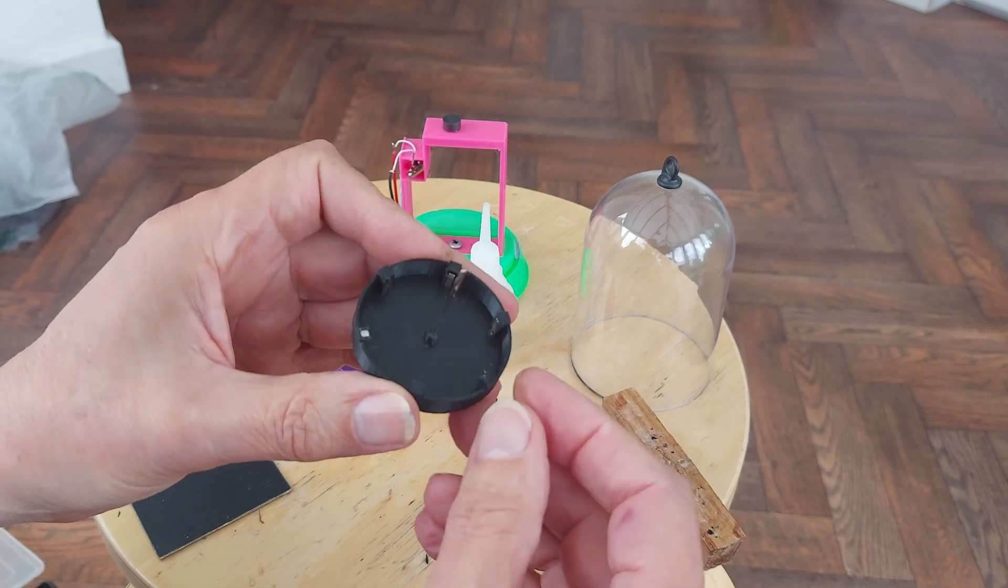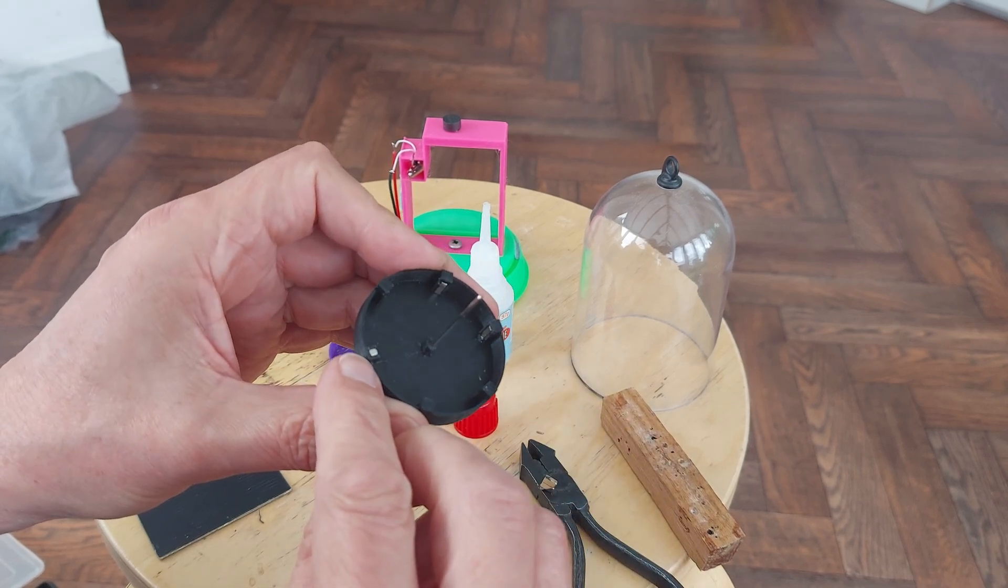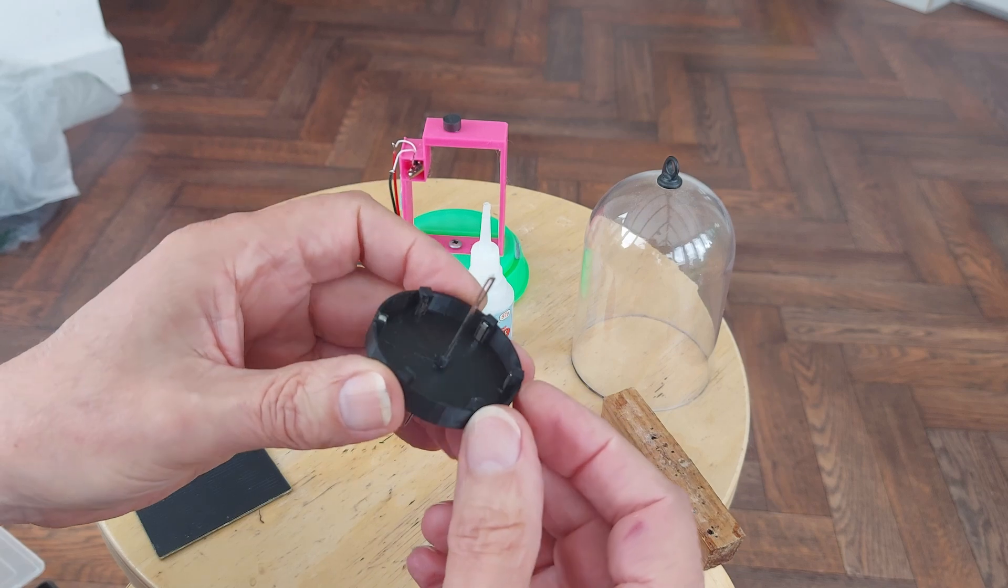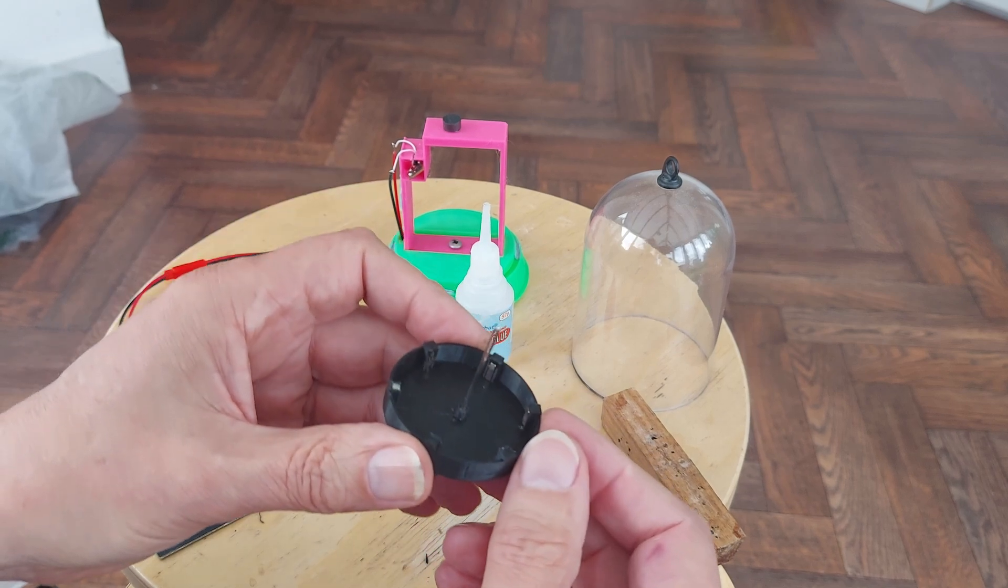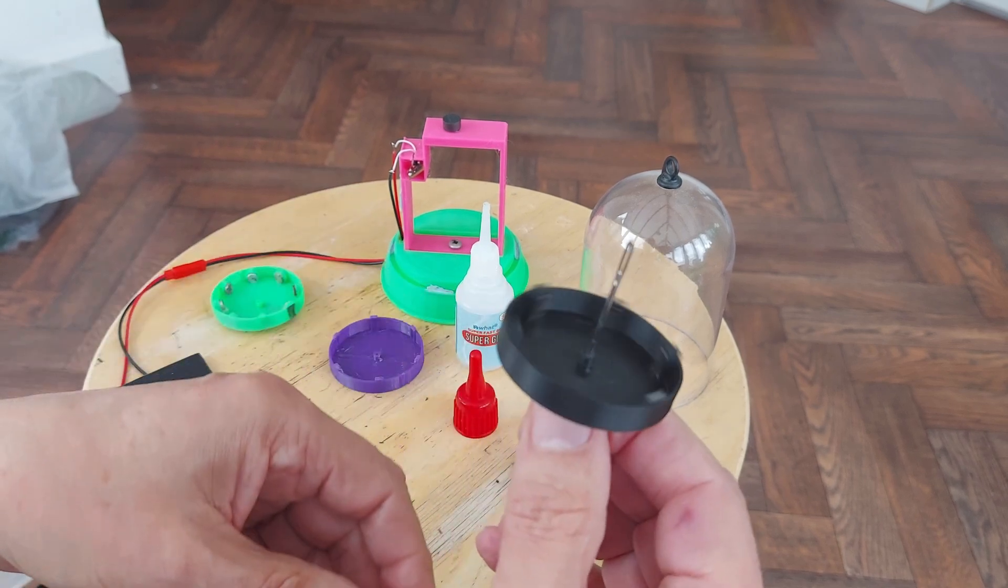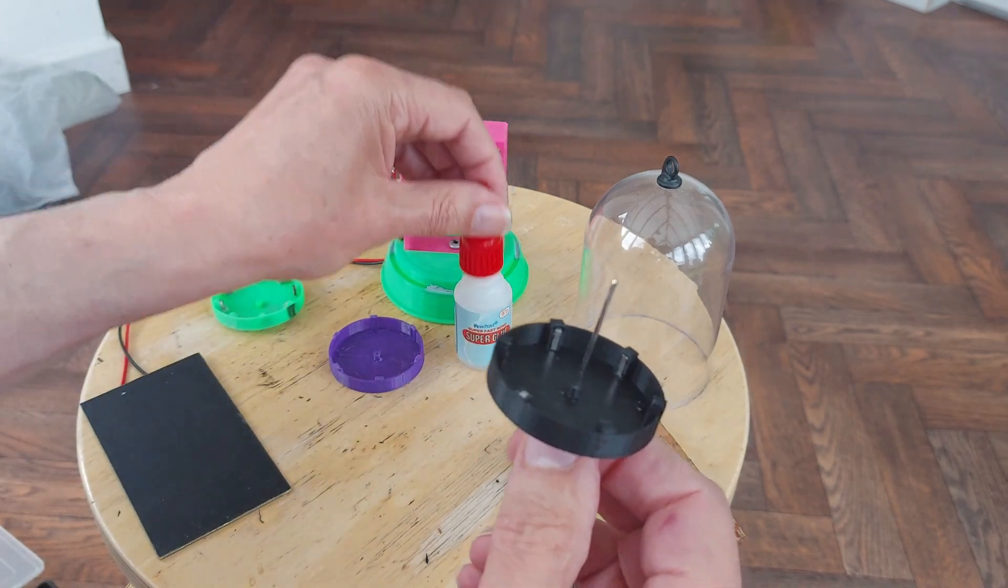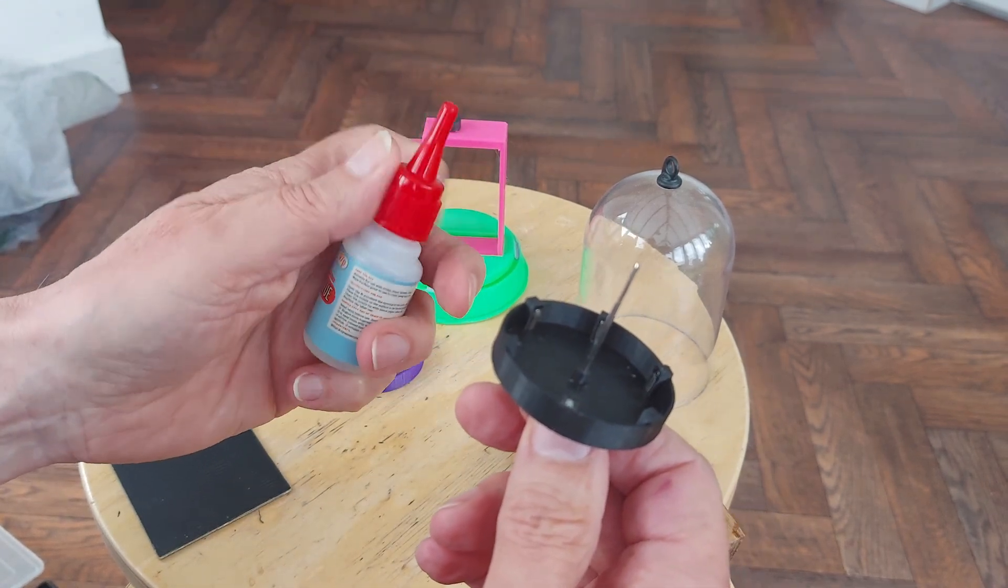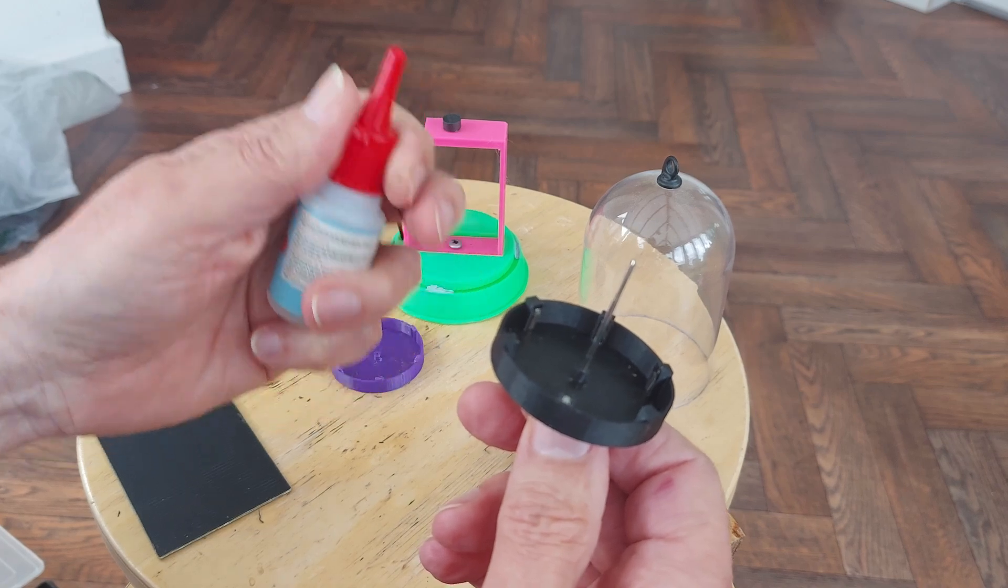But if I printed it again, I'd give them just a little bit more height so they fit in easier. Anyway, it's in there now. I put a little spot of superglue on them as well to try and stop them jumping out.